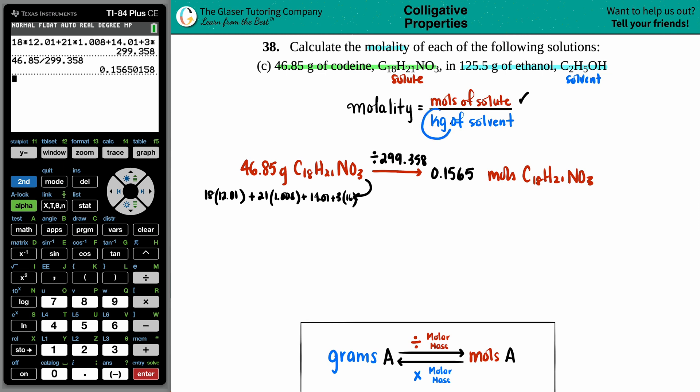Now, let's see, are we in the correct unit for the denominator? Nope. They gave me grams. So I have to go from 125.5 grams of the ethanol, C2H5OH, to kilograms of the ethanol.